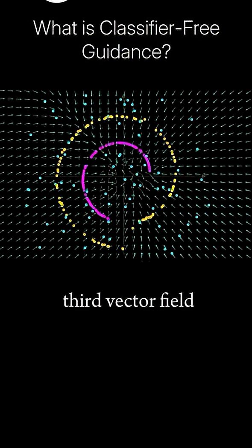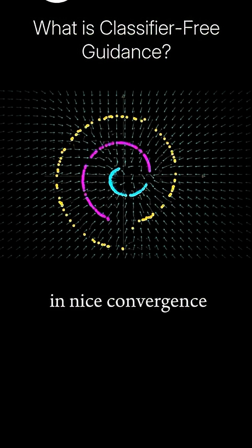Finally, we get a third vector field for our people examples that again results in nice convergence to our spiral.